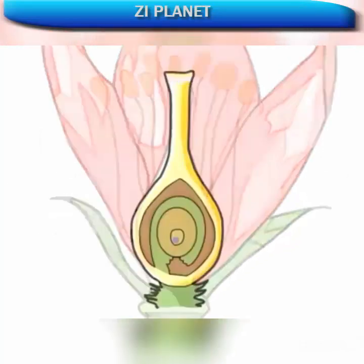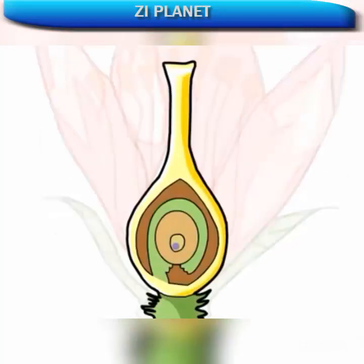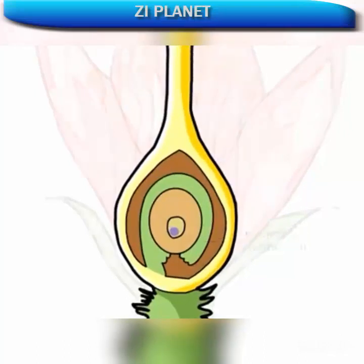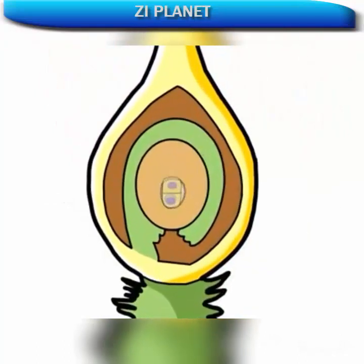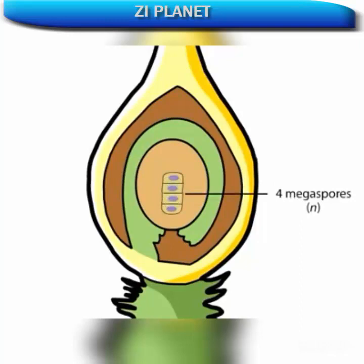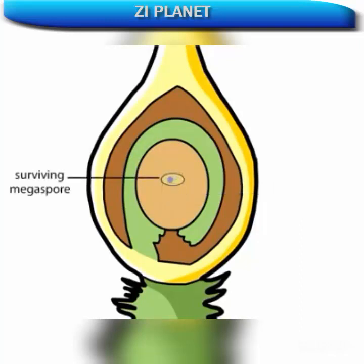The ovule contains a reproductive cell called the Megaspore mother cell, or Megasporocyte. This cell is diploid and undergoes meiosis to produce four haploid Megaspores. In most species, three degenerate, leaving one surviving Megaspore.